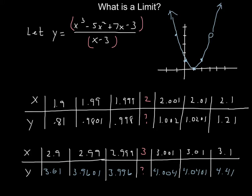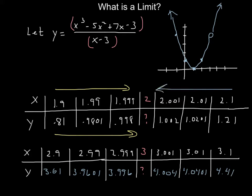What you have to ask yourself is: as x gets closer to 2, what are the y-values approaching? Looking from the right side with 2.1 I get 1.21, with 2.01 I get 1.0201, and with 2.001 I get 1.002. As I approach 2 from the left, my y-values are getting closer and closer to 1. As I approach 2 from the right, my y-values are also getting closer to 1.